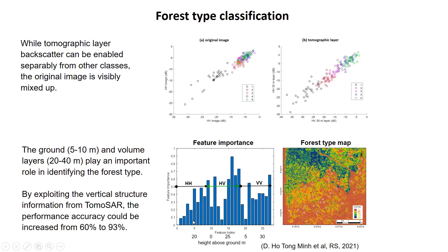This figure reveals that the volume layers, for example from 20 meters to 40 meters, play an important role in the classification process. Interestingly, it also shows that the ground layers, for example from 5 to 10 meters, contribute useful signatures to the performance. Such a contribution from ground layers can be explained by signal extinction, where the signal decreases in the presence of high biomass and thus high density.